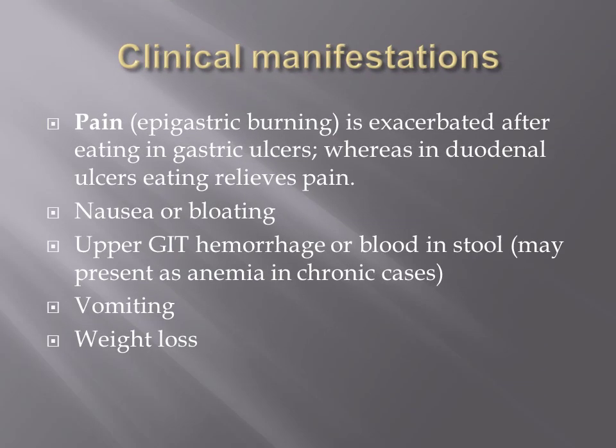One of the most important clinical manifestations in peptic ulcer disease is pain, an epigastric burning sensation which is exacerbated after eating in gastric ulcers, whereas in duodenal ulcers, eating relieves pain. Nausea or bloating can also occur, as could upper GI hemorrhage, and blood may also be found in stool. In chronic cases, this may present as anemia. Vomiting and weight loss are less common occurrences.